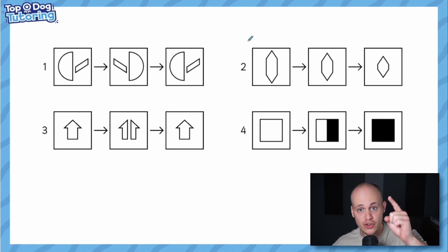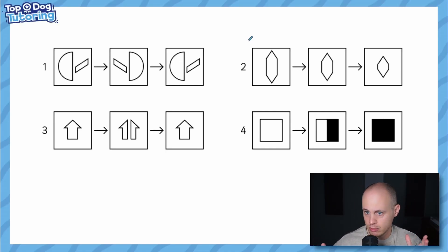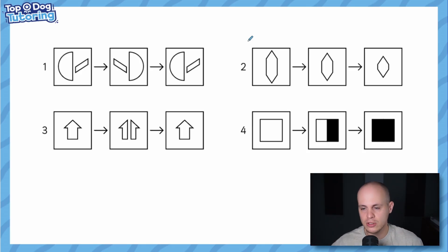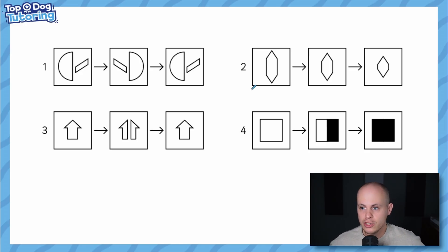Hey guys, it's Hayden here back with another non-verbal reasoning 11 plus video. Today you might be thinking you've not seen this one before — it's a fairly new question type called 'operations.' In this question type, you are shown a series of operations — in this case, four different ones — which all symbolize and represent a change happening to a shape.